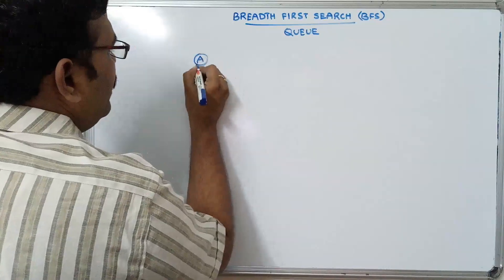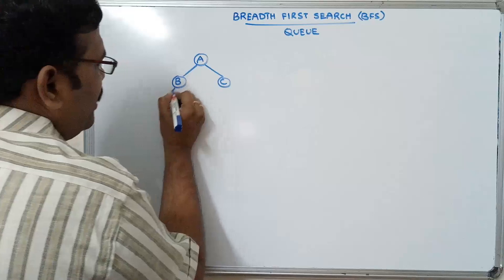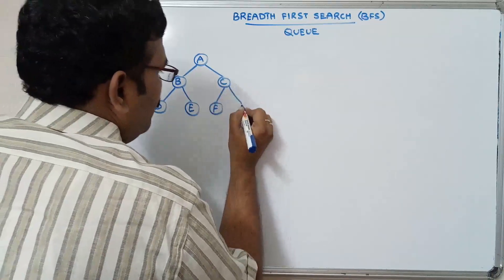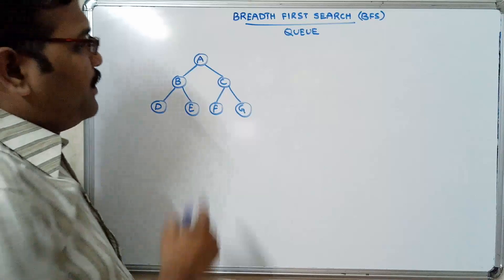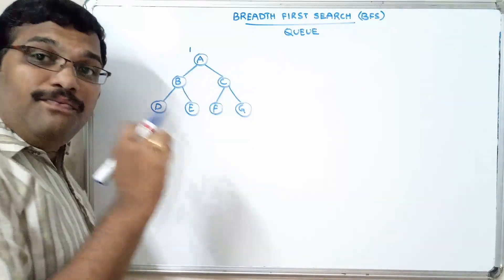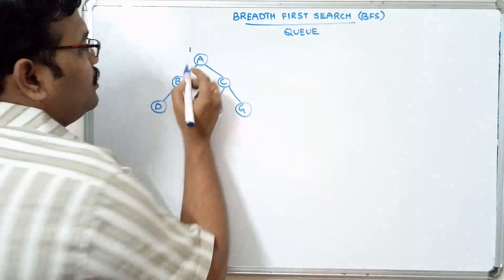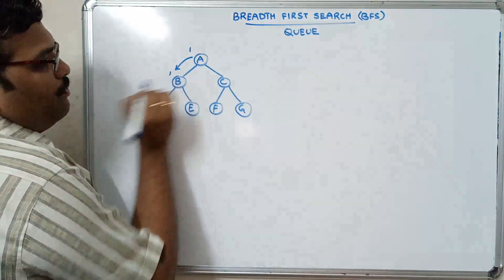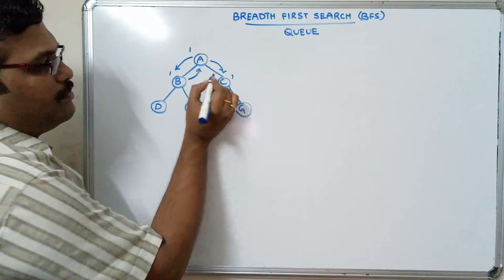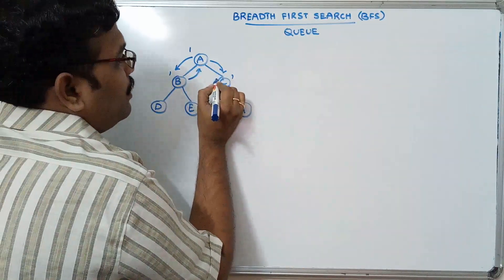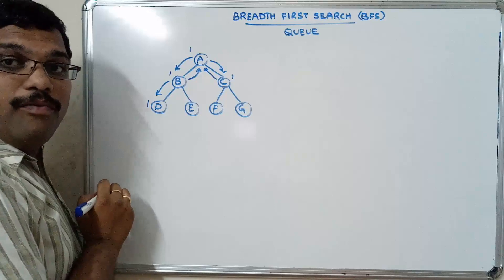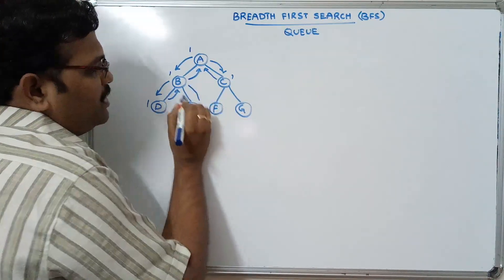We'll take the same example with nodes A, B, C, D, E, F, G. First, travel from A — mark it as visited. Then visit all the adjacent nodes of A. Coming to the next level, visit the adjacent nodes of B, then visit the adjacent nodes of E.